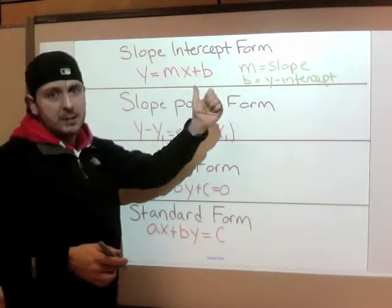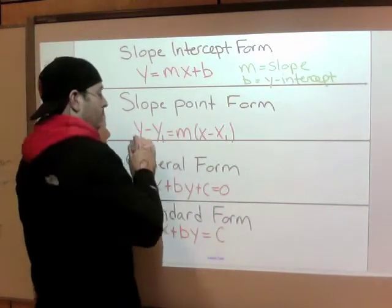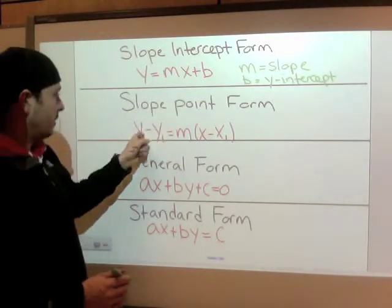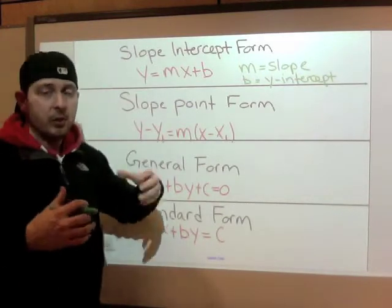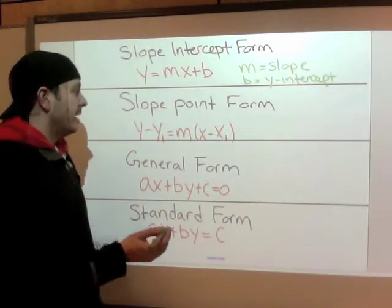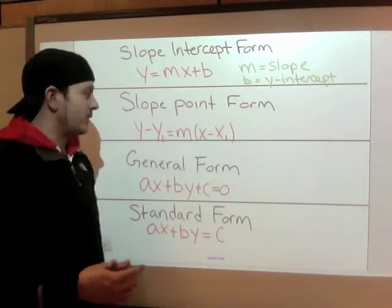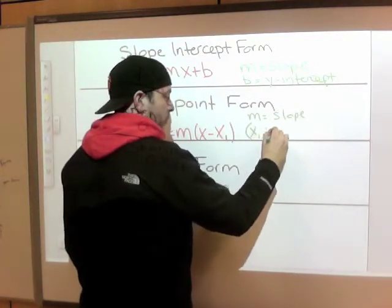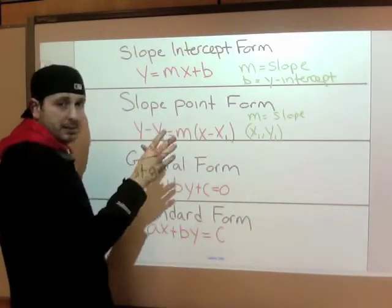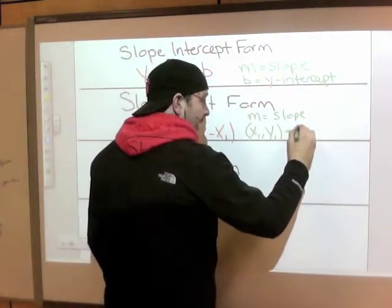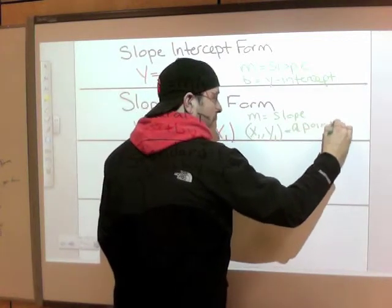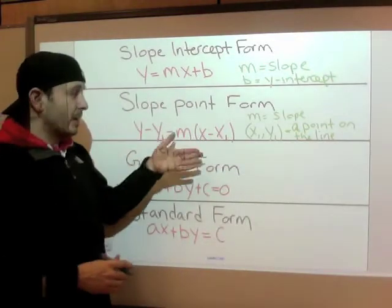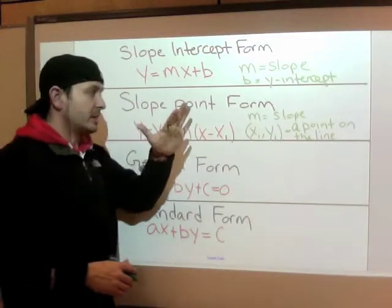If you don't understand the pieces of that, go back and watch the old video. Next, y minus y1 equals m bracket x minus x1. The one thing you'll notice about all these forms is they all have a Y and an X — those are placeholders that tell us it's a linear relation. The other parts tell us what to do with it. M equals the slope. X1 and Y1 — notice those are minus signs, that's important — X1, Y1 means this is a point on the line. There could be lots of equations in this form, but X1, Y1 is one of the points on that line.